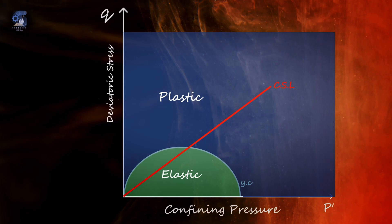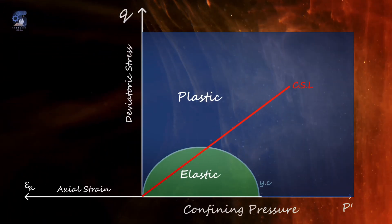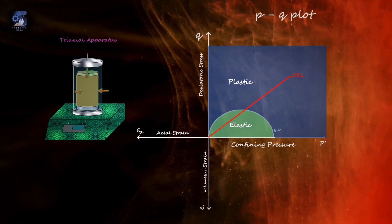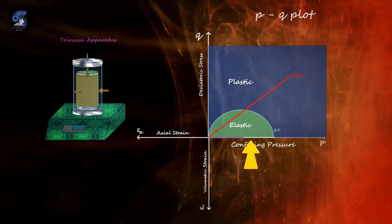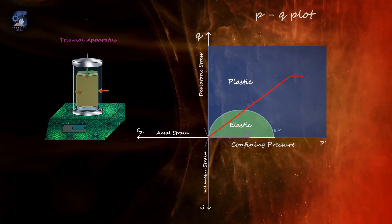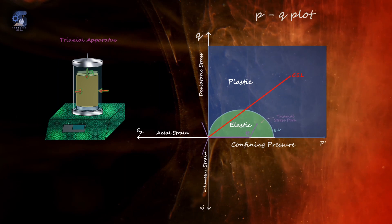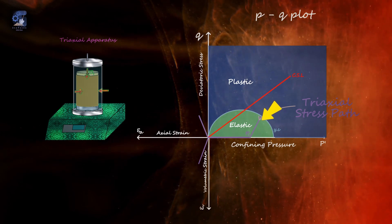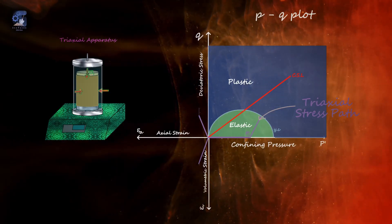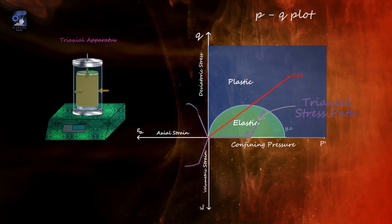To demonstrate this, let's go back and modify our P-Q plot by adding an axial and a volumetric strain axis. If we subject our sample to an initial confining pressure P0, then perform a triaxial shear test. We can observe that when the triaxial stress path reaches the yield surface, it corresponds with the end of the linear elastic deformation in both axial and volumetric strain curves. After this point, there is a transition into plastic deformation, as the sample starts to show irreversible strain deformations.